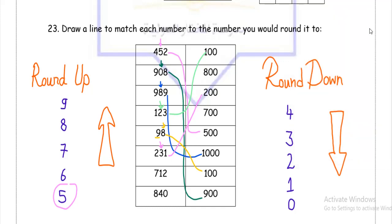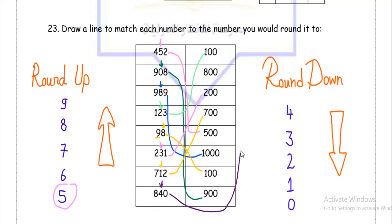Before the last is 712. Look at the tens here — 1. And 1 rounds down. So 712 will round down to 700. And last is 840. Look at the 4 in the tens — because of 4, I'm going to round down. 840 will become 800.